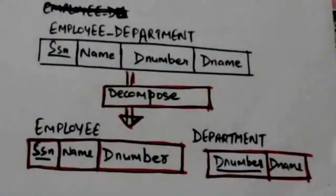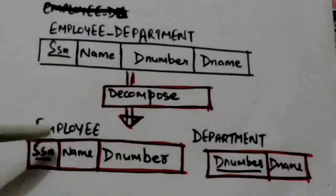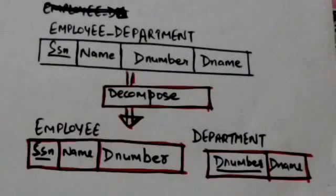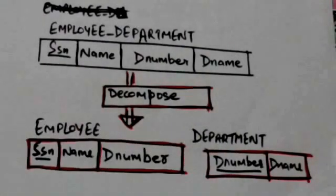We can normalize the Employee-Department relation schema by decomposing it into two 3NF relation schemas: Employee and Department. These two relation schemas, Employee and Department, are in 3NF.